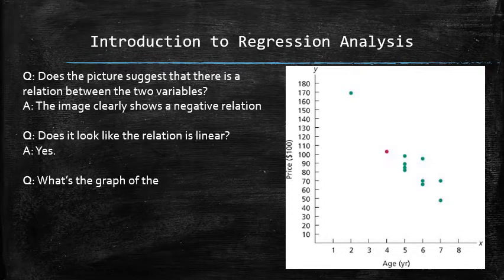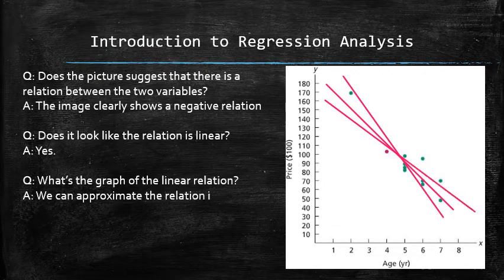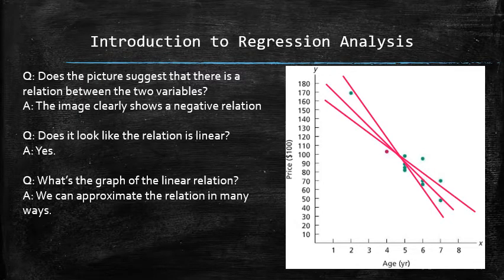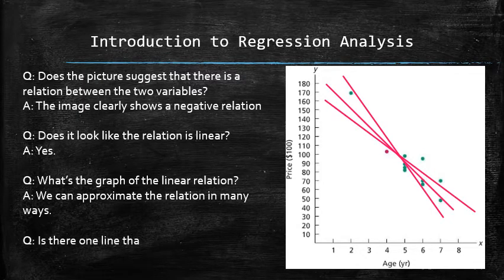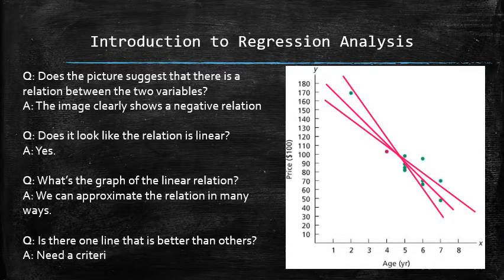What is the graph of that linear relation then? We can approximate this relation with many lines. Is there one line that is better than others? To answer this question, we have to develop a criterion.